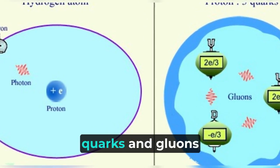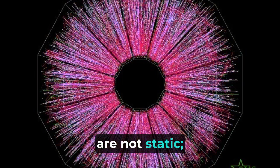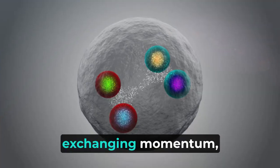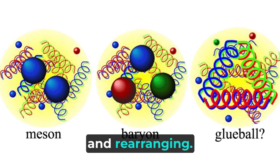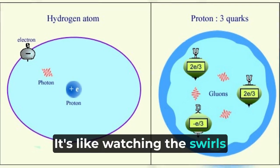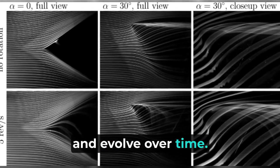Within the proton, quarks and gluons are not static. They are constantly interacting, exchanging momentum, and rearranging. It's like watching the swirls and patterns in the smoke change and evolve over time.